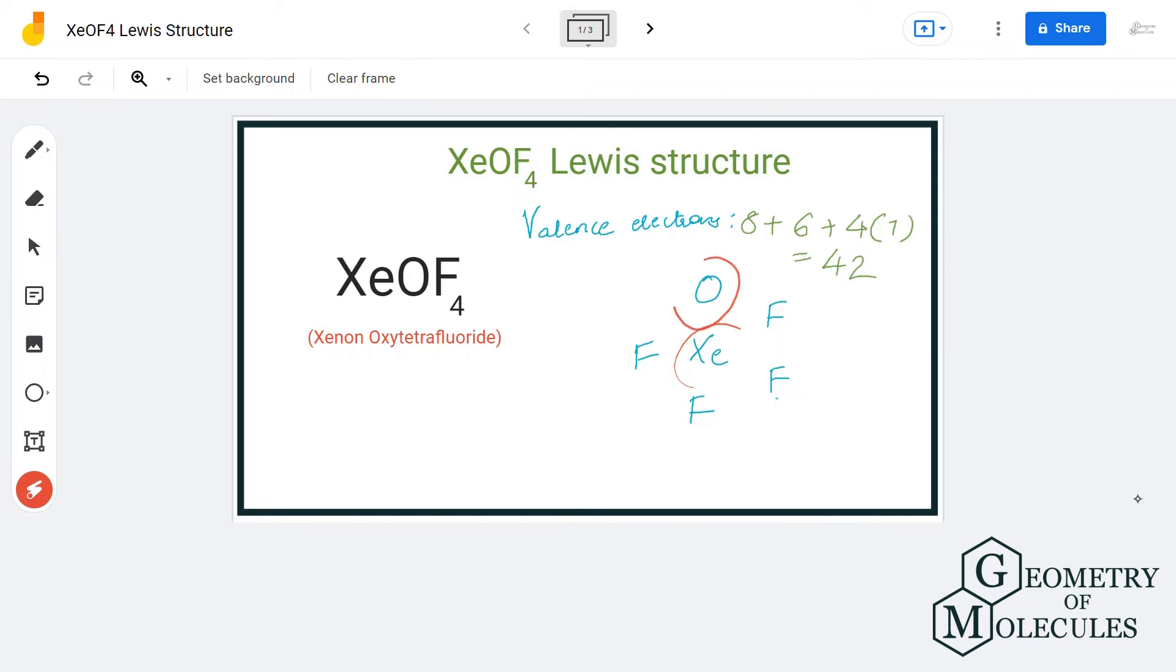Oxygen atom like this, and all four fluorine atoms will be arranged around the xenon atom. To show a bond between these atoms we will place a pair of electrons. Doing that, I will be using up 10 valence electrons and I'm still left with 32.